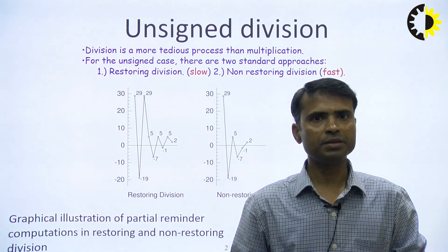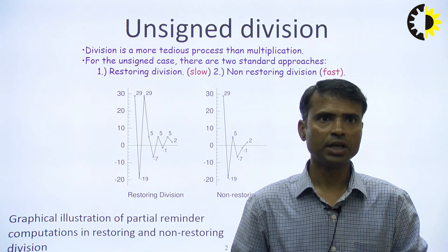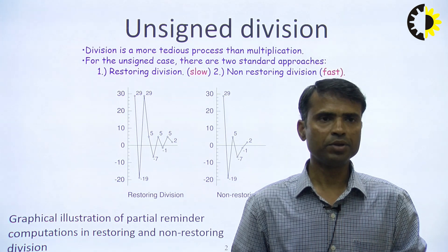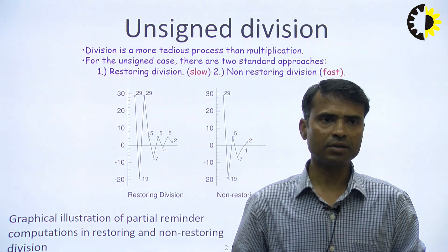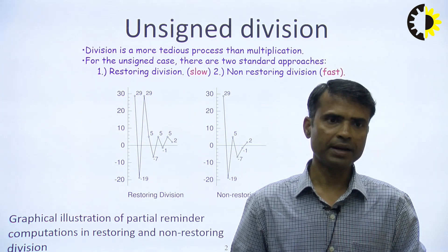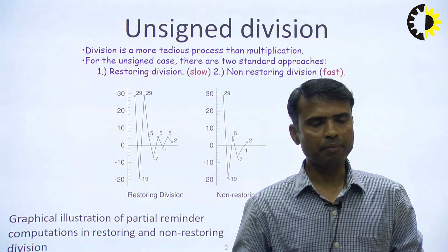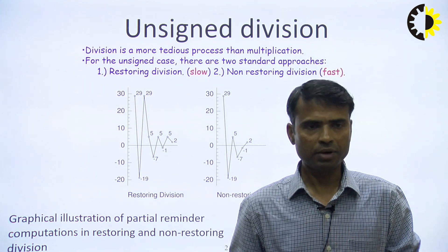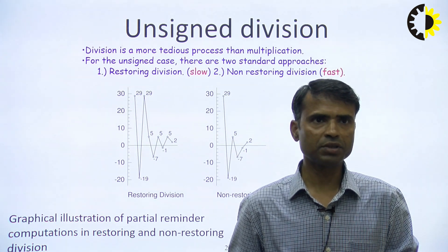The division we will perform is under the category of unsigned division — the number is not in signed notation. There is no negative notation used for division, because we are not very much concerned about the sign of the dividend and divisor; we are basically interested in the remainder and the quotient. Division is comparatively more tedious than multiplication, and just as multiplication involves addition, this division process involves subtraction.